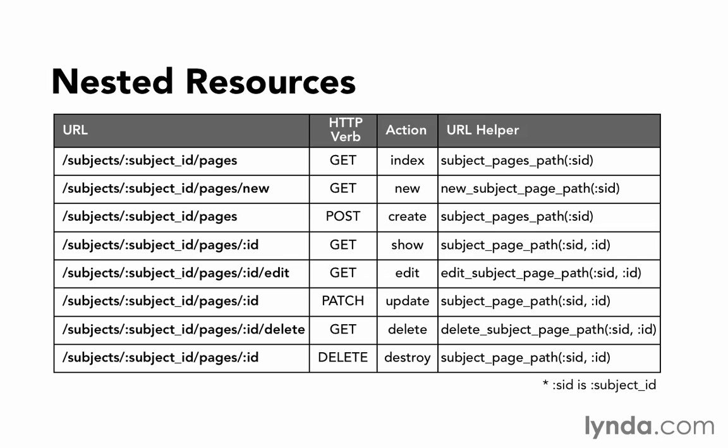Now that's a lot of text, so it may look complicated at first, but there's a logic to it that makes it easy to follow. First, notice that in the URL column, all of the URLs begin with the same thing: subjects slash and the subject ID. We're finding the subject ID first — it's the same as we had for our show action on our subjects page. And then after that, the rest of the URL is exactly the same as what we would expect if we were looking at a non-nested route.